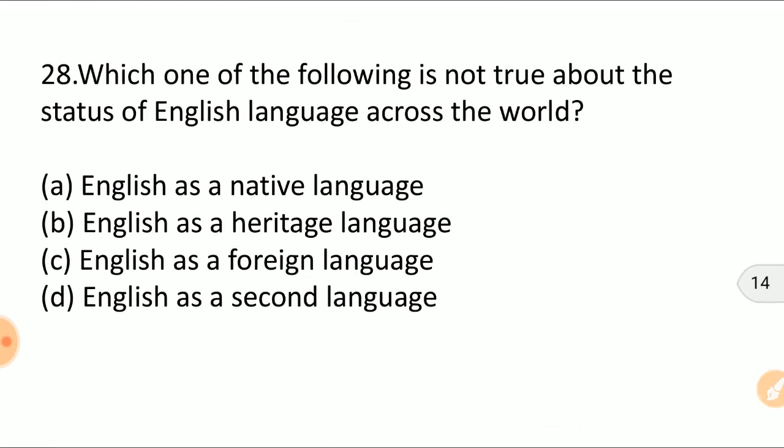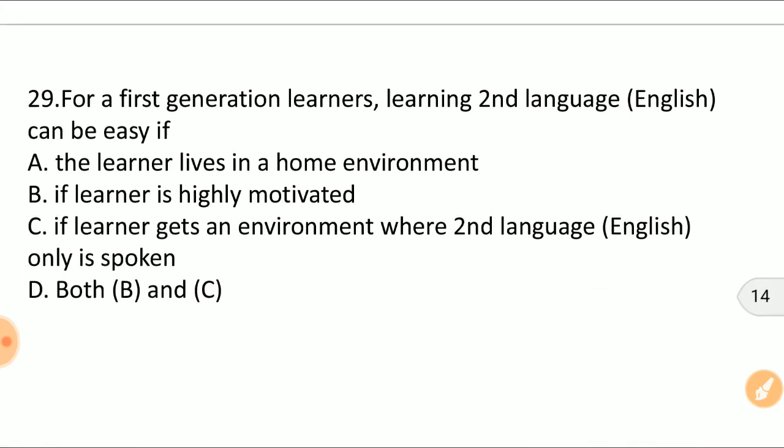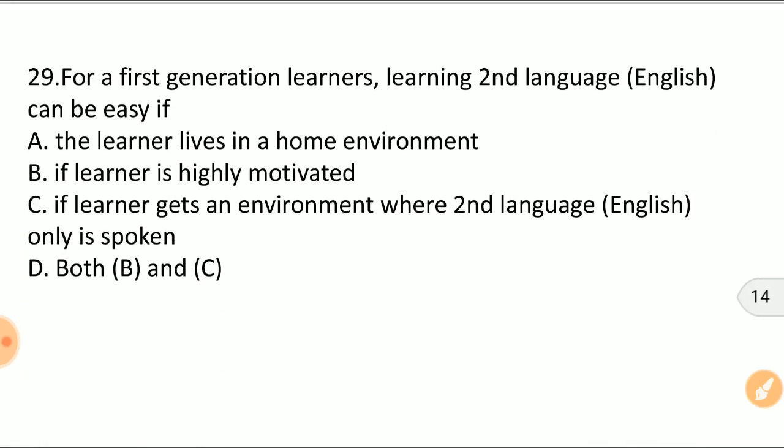Which one of the following is not true about the status of English language across the world? English as a native language, English as a heritage language, English as a foreign language, or English as a second language. The right answer is B, English as a heritage language.